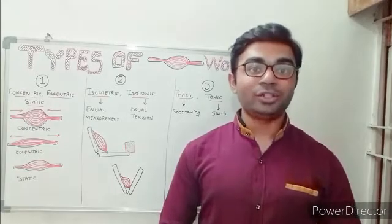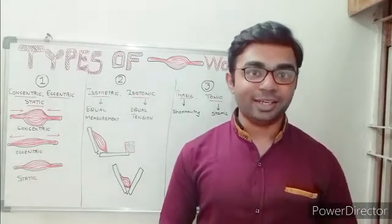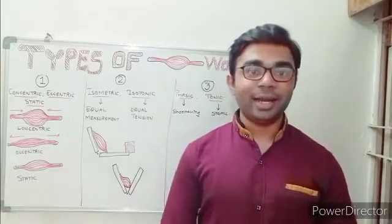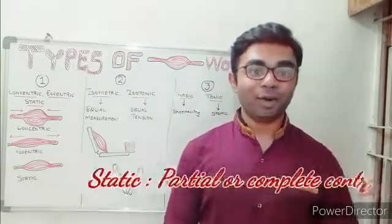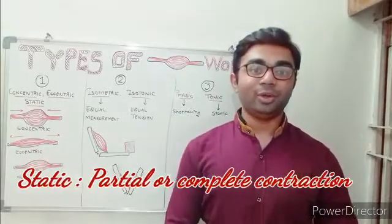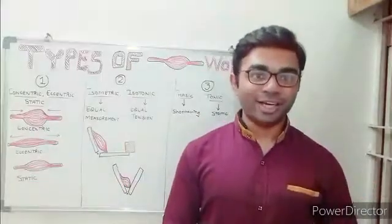The last one is static. Partial or complete state of contraction of the muscle is known as the static type of muscle work.